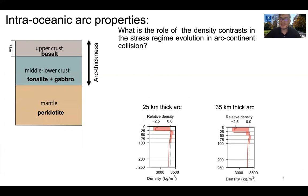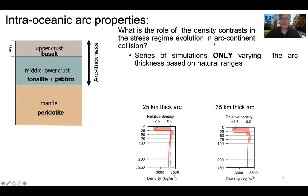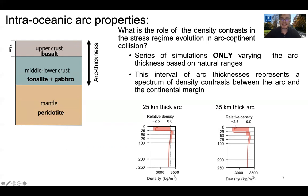In order to address the role of density contrast in the stress regime evolution in arc-continent collision, we assume the following structure for the intra-oceanic arc: an upper crust with the composition of basalt, seven kilometers in thickness, and a middle-lower arc crust with the composition of tonalite and gabbro, with variable thickness. We perform a series of simulations varying arc thickness based on natural examples, representing a spectrum of density contrast between the arc and the continental plate. The buoyancy of the arc increases as the arc thickness increases.